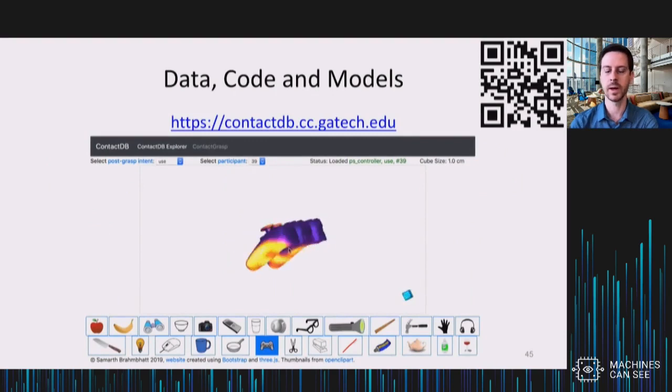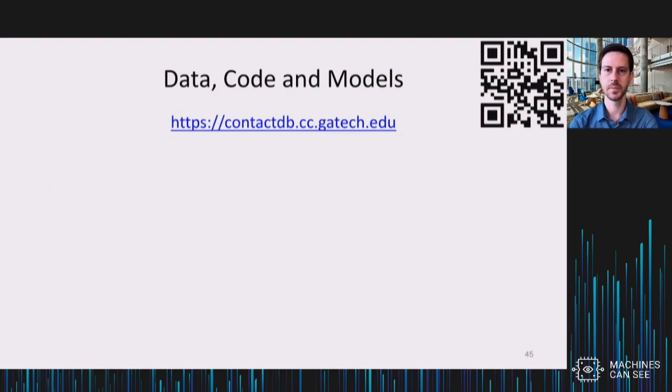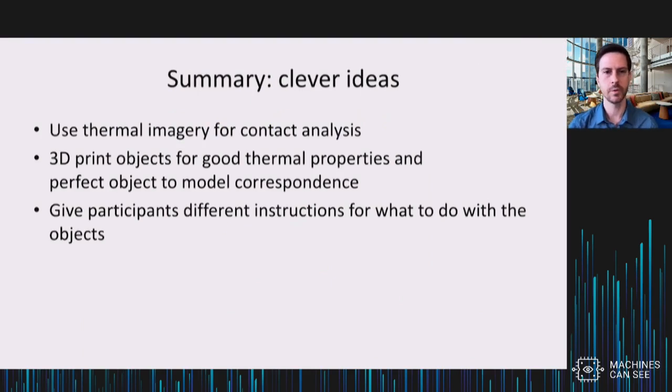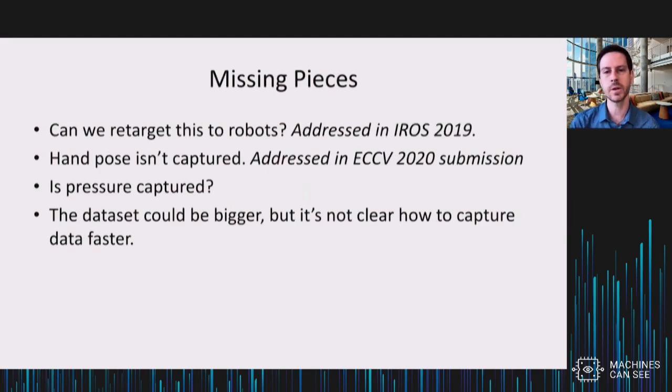So all of this data is available online. You can go to contactdb.cc.gatech.edu to get these thousands of contact maps for these objects. So to summarize this first part of the work, I think these were the real clever ideas: the whole idea of using thermal imagery for retrospective contact analysis. We initially didn't try using 3D printed objects, but that ended up being a critical decision as well because they have good thermal properties and because they let us have a corresponding virtual model that's a perfect match. And the idea of telling people different ways to use the objects so that we get different types of grasps that emerge, that was important as well. And there's only two ways right now, either to use the object or to hand it off, but you could imagine others as well.